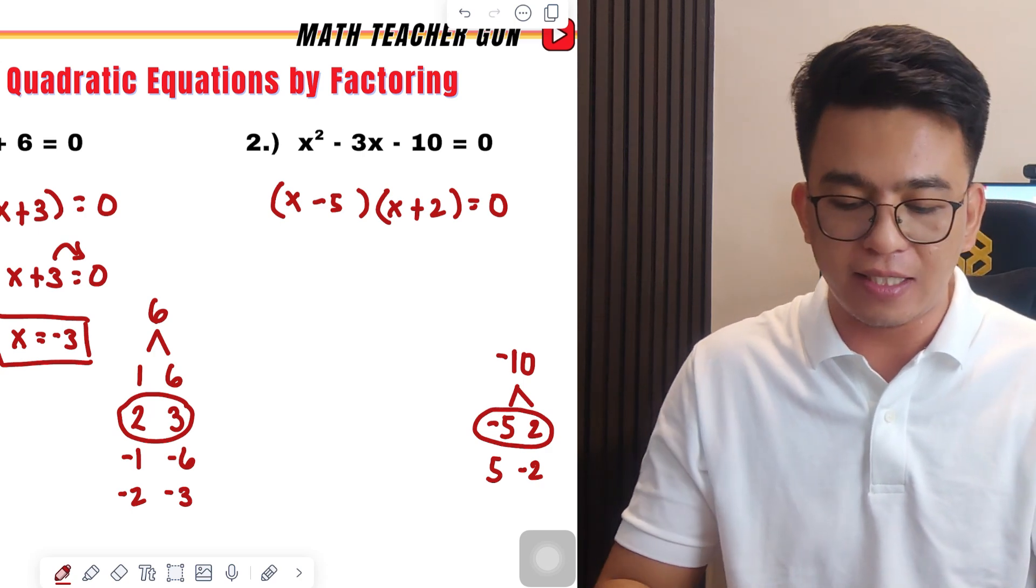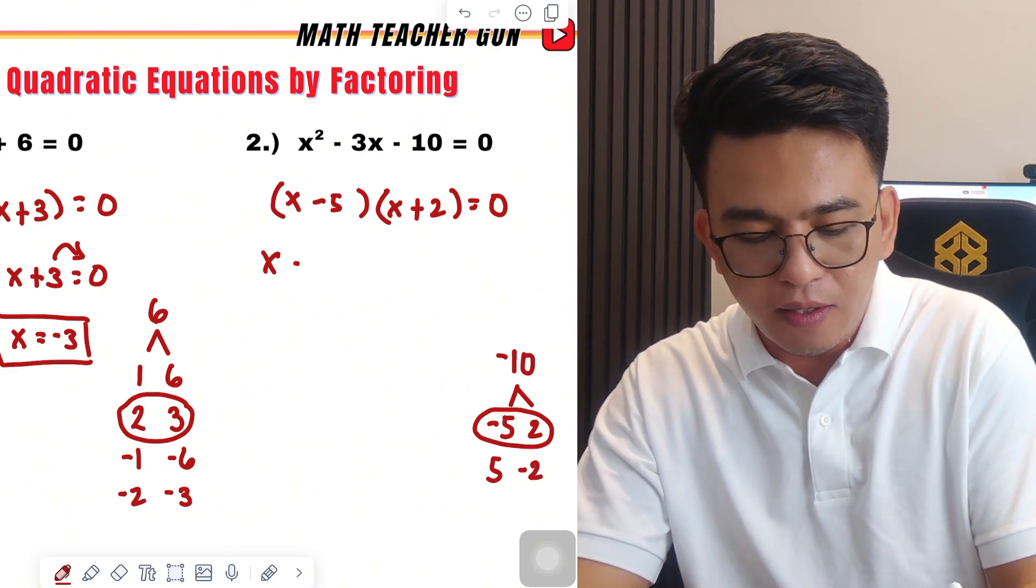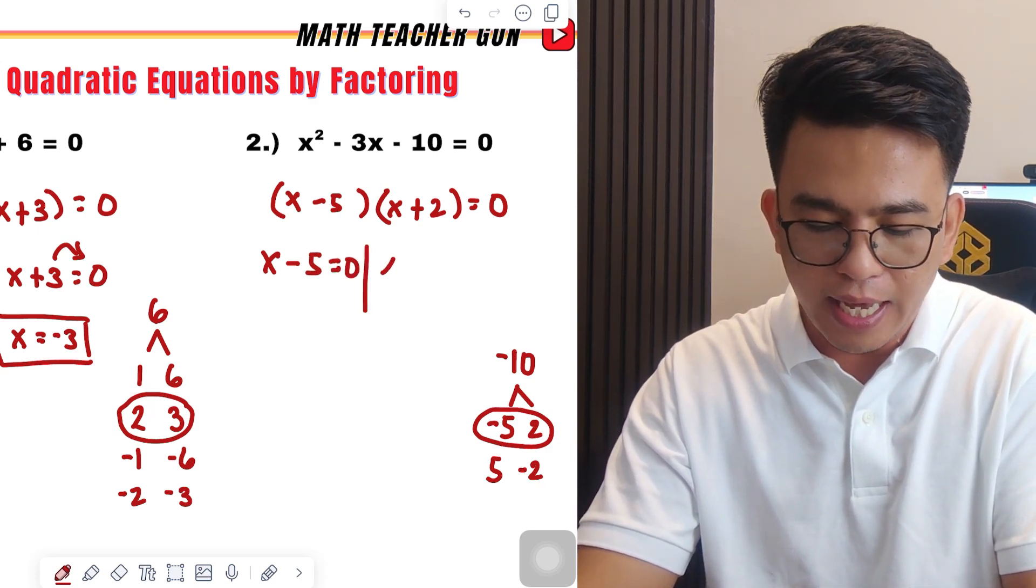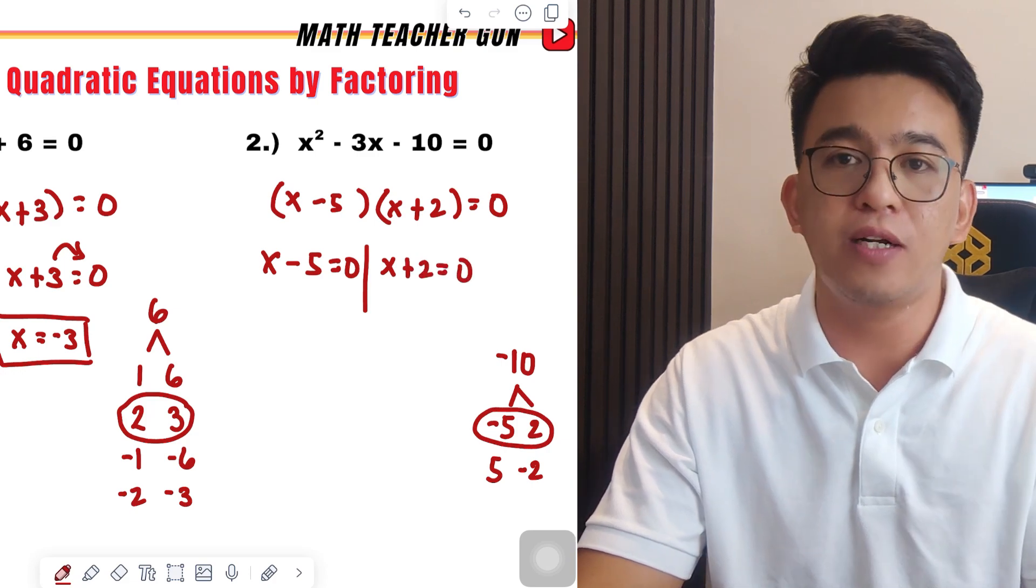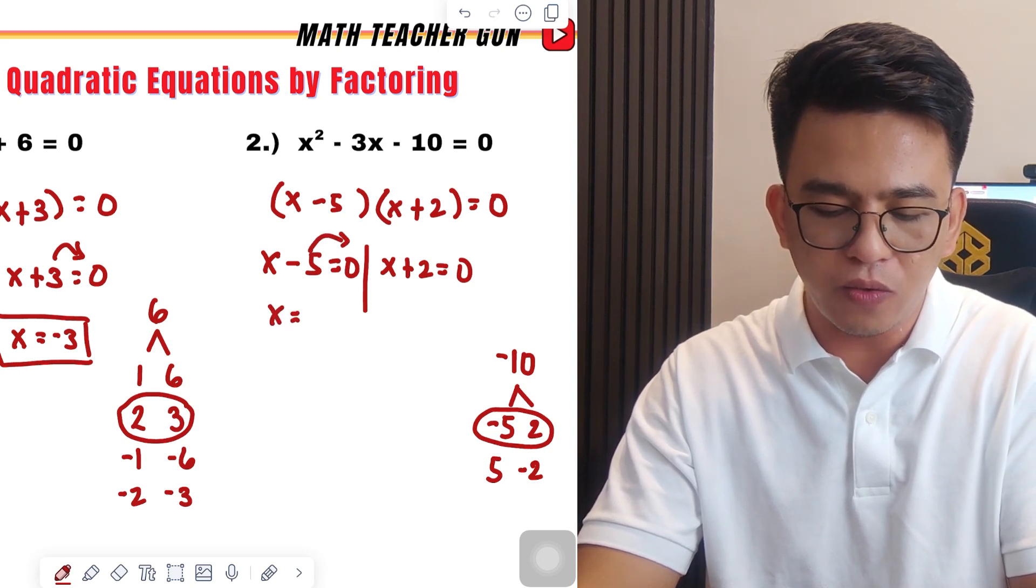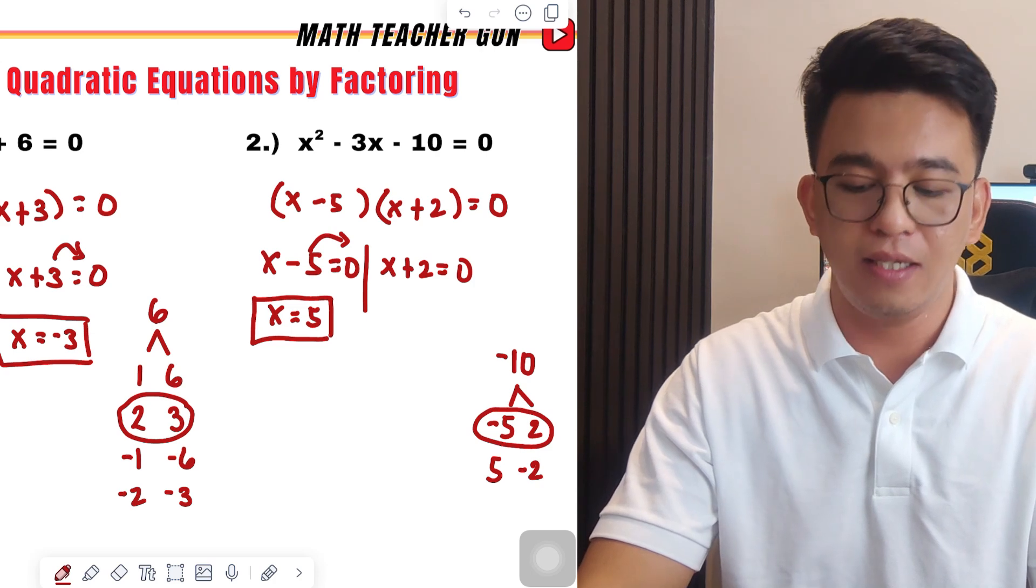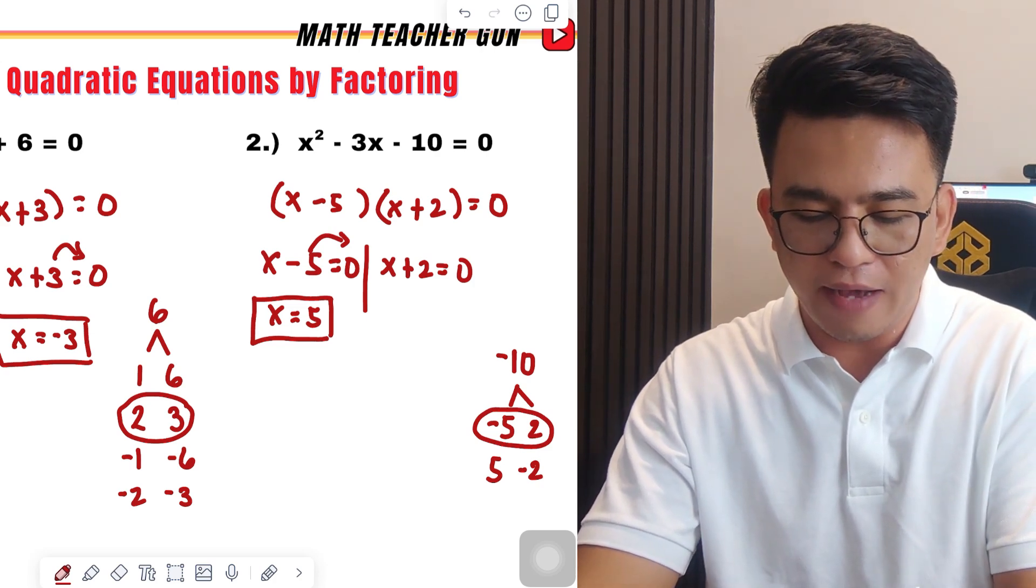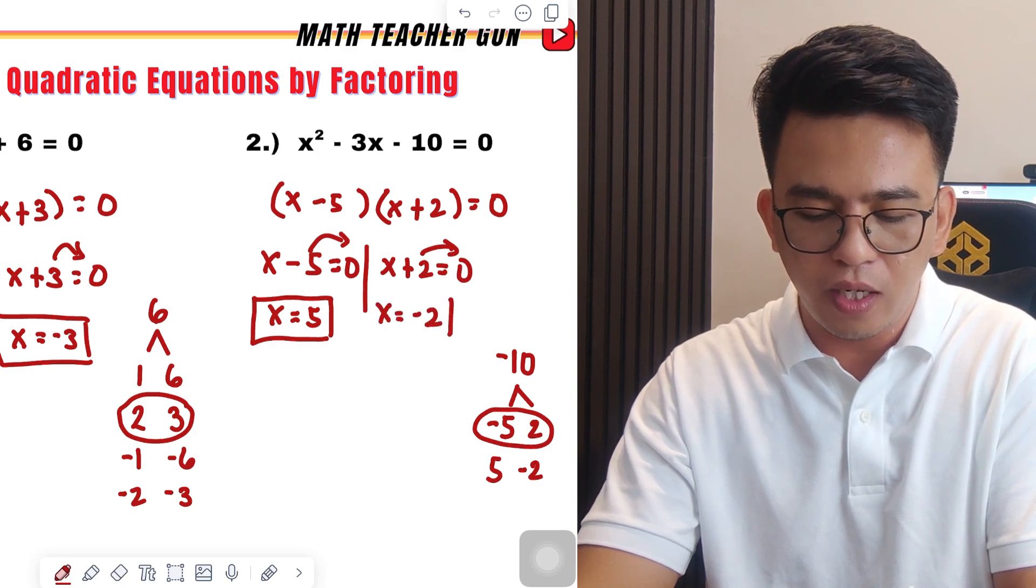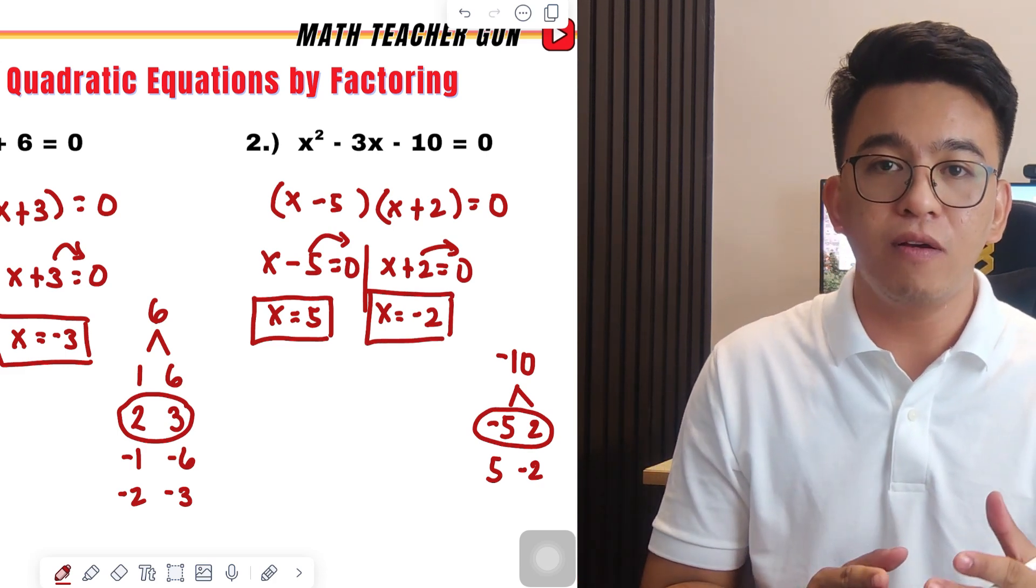So, we equate each factor: x minus 5 is equal to 0, while the other one is x plus 2 is equal to 0. Transpose this to the other side, it will become x is equal to 5. This is now the first value of x. Here, we have transpose, you need to transpose 2: x is equal to negative 2. And as you can see, the values of x are 5 or negative 2.